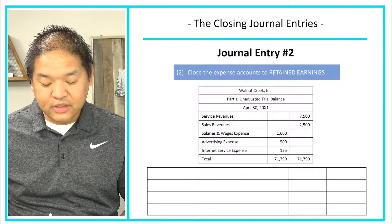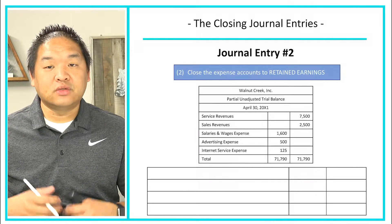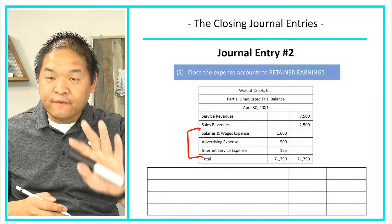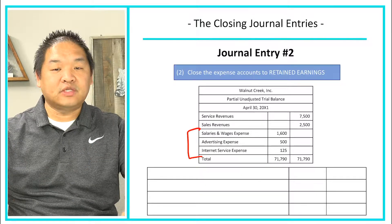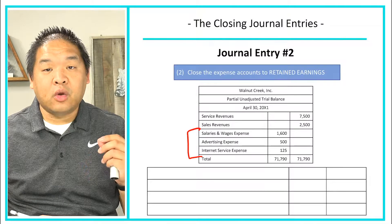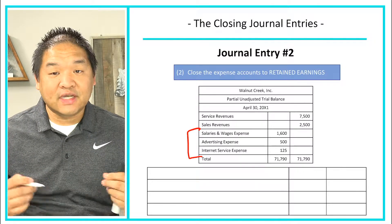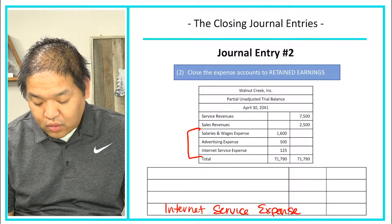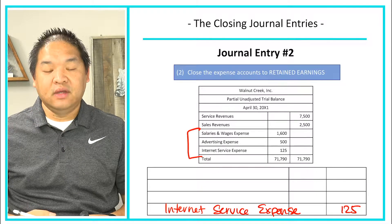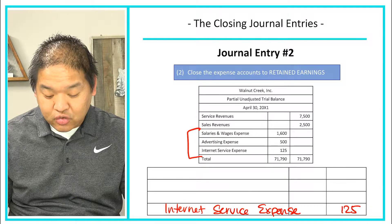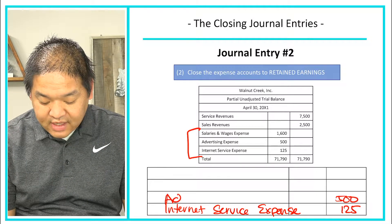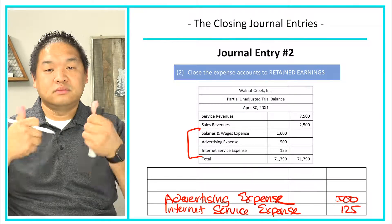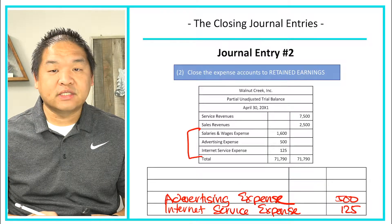The second entry is closing all of our expense accounts to retained earnings. To close them out we do the opposite — since they are currently debits, we credit them. Starting from the bottom: we credit internet service expense for $125, and then advertising expense — to close that debit we credit it $500.